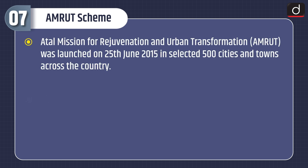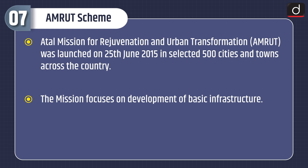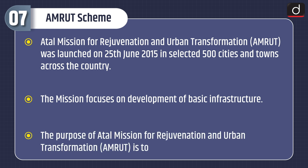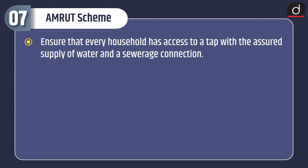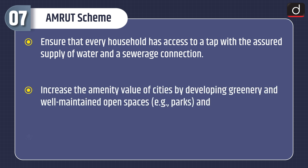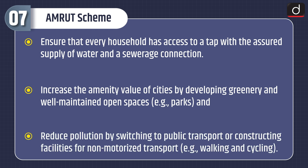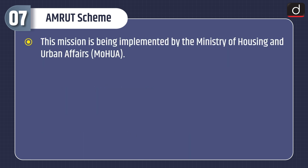Now let's discuss the AMRUT Scheme. Atal Mission for Regeneration and Urban Transformation, or AMRUT, was launched on 25th June 2015 in selected 500 cities and towns across the country. The mission focuses on development of basic infrastructure. Its purpose is to ensure that every household has access to a tap with assured supply of water and a sewerage connection, increase the amenity value of cities by developing greenery and well-maintained open spaces such as parks, and reduce pollution by switching to public transport or constructing facilities for non-motorized transport such as walking and cycling. This mission is being implemented by the Ministry of Housing and Urban Affairs.